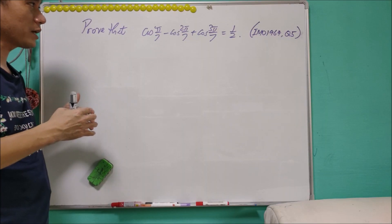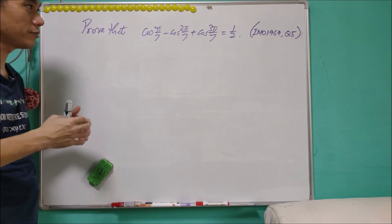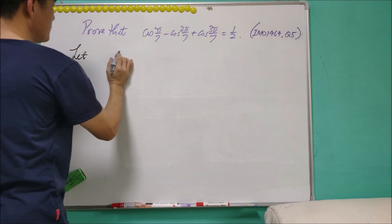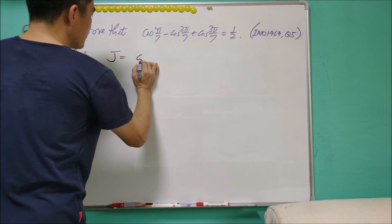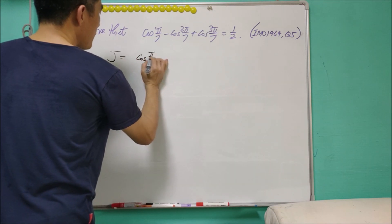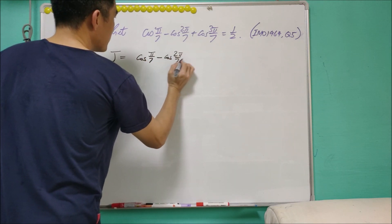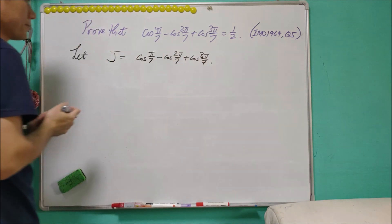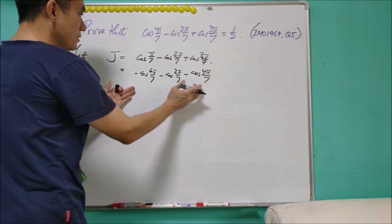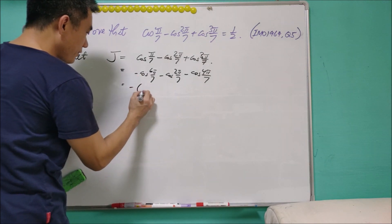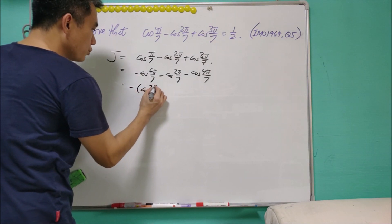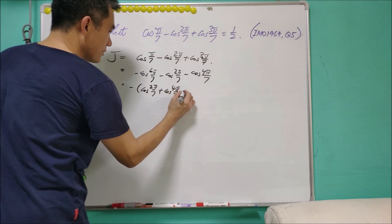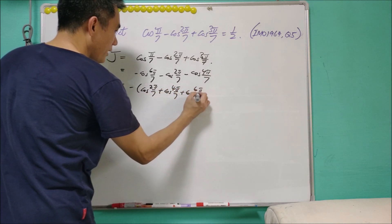This question also becomes a usual training question for Math Olympiad. We may let J equal cos(π/7) minus cos(2π/7) plus cos(3π/7). Note that J can be written in the form: J equals the negative of cos(2π/7) plus cos(4π/7) plus cos(6π/7).